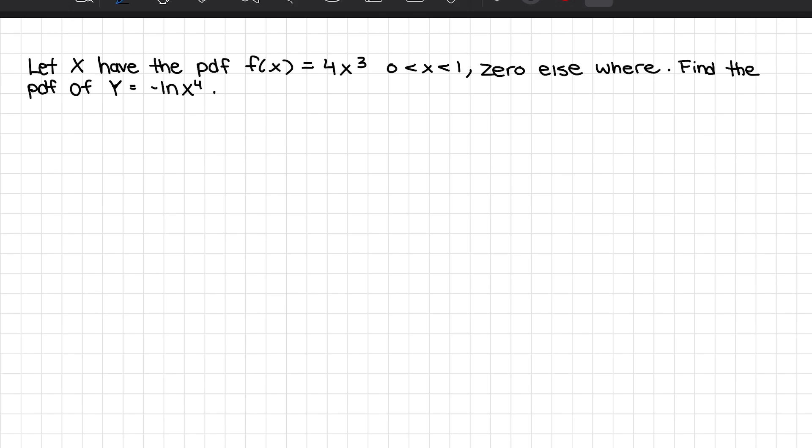We are given the pdf of a random variable X. Our pdf here is f(x) equals 4x cubed, where x goes from 0 to 1. And we want to find the pdf of Y given Y equals negative ln of x to the power of 4.